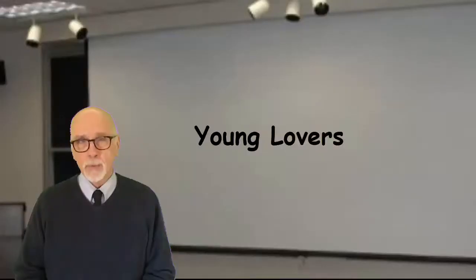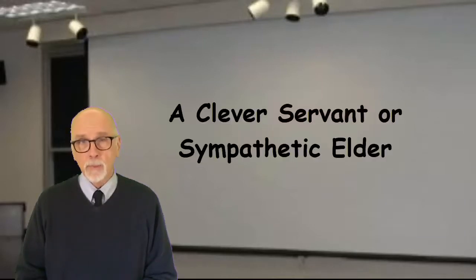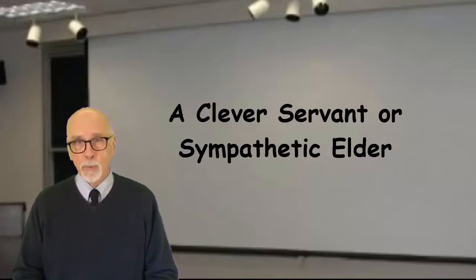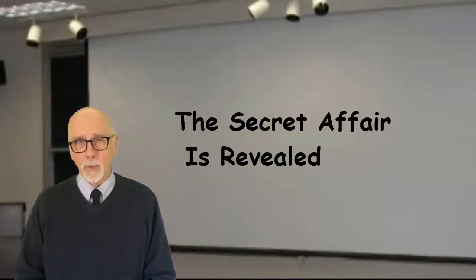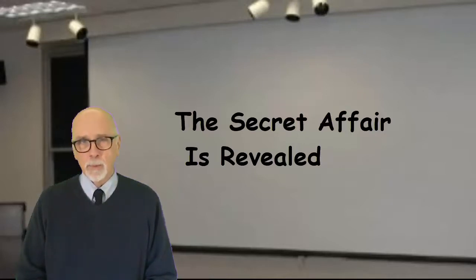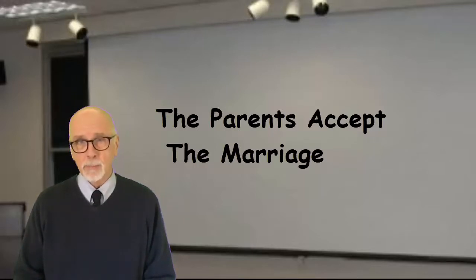The new comedy plot is a structure that begins with two young people who want to get married, but there's an obstacle — their parents object. Also, there's a clever servant or a sympathetic member of the older generation who will help the young couple so that they will be able to elope or in some other way get married. Eventually, the ruse will be found out and the problem will be resolved. The parents will accept the marriage, get used to it. Sometimes it turns out that the objection was baseless in the first place.